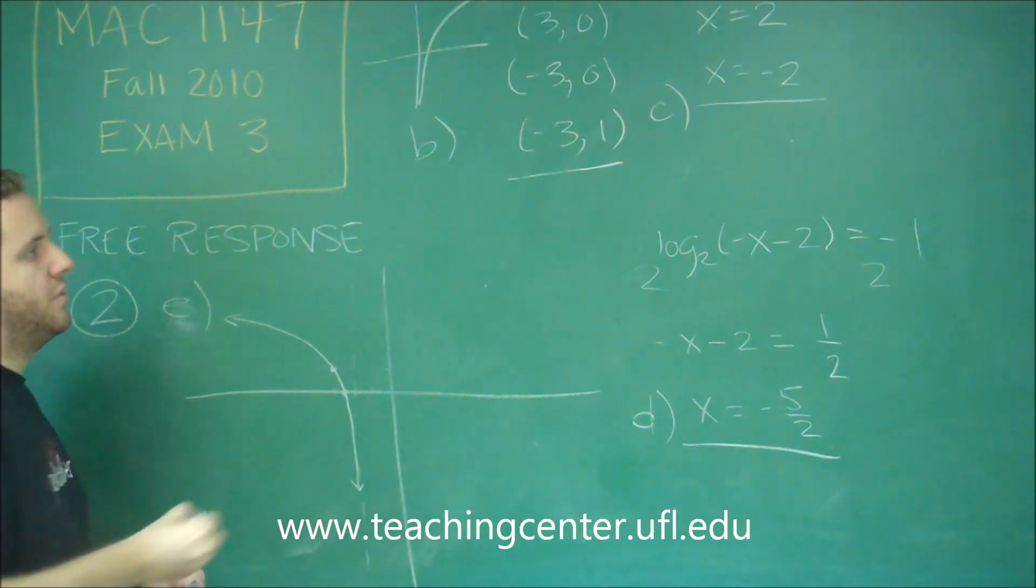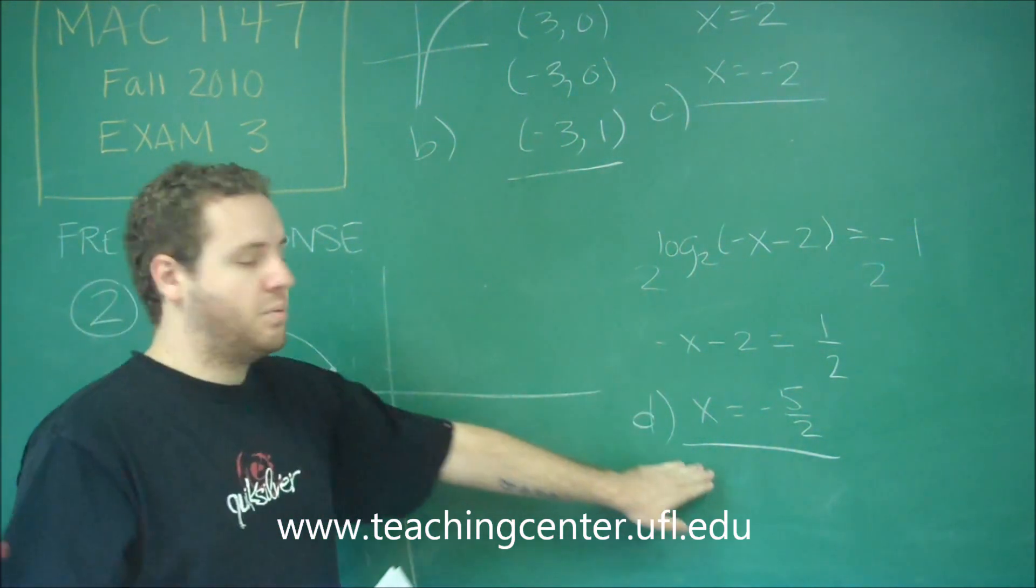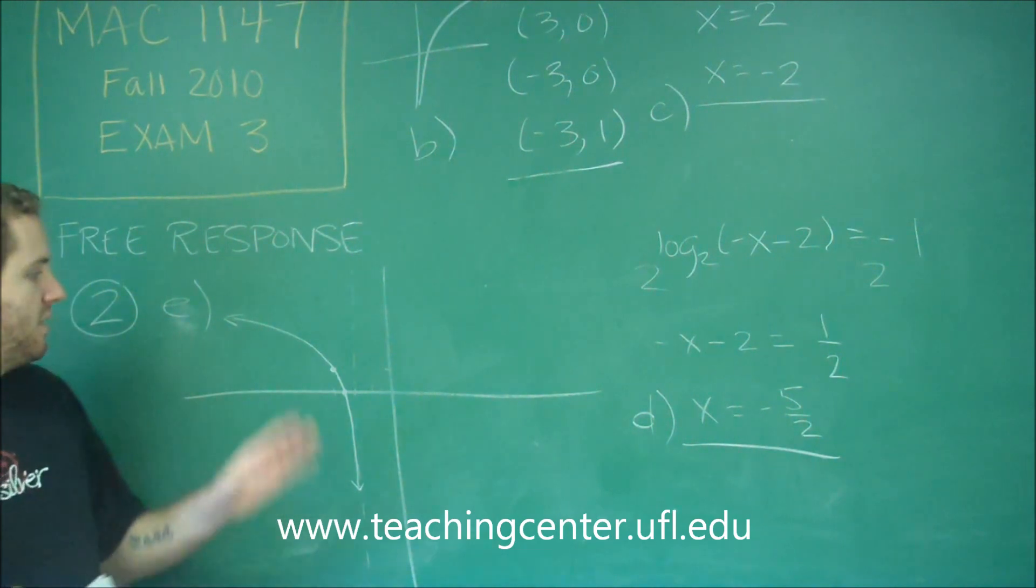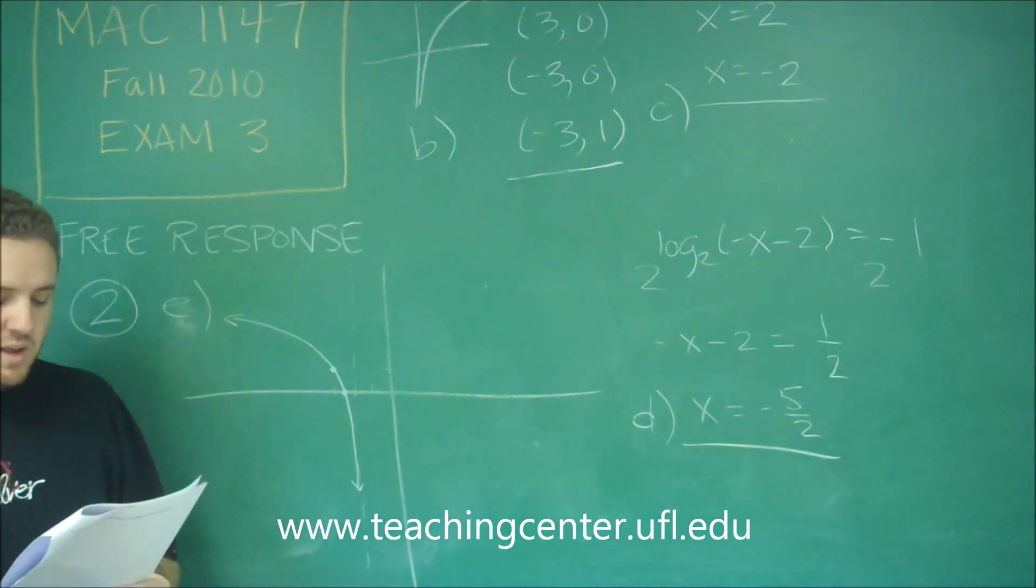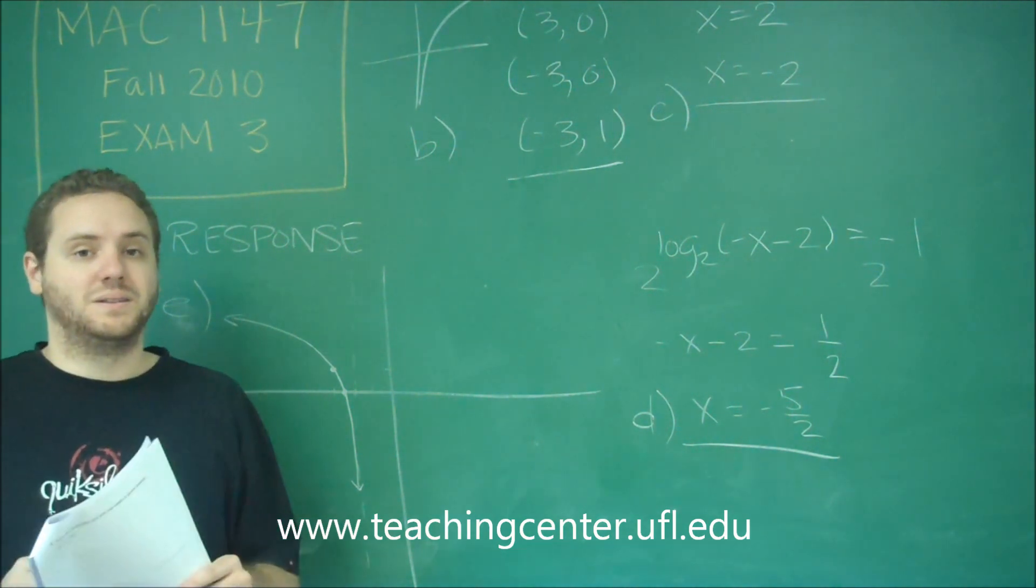Make sure you cross through this point and this point which are the important ones that you found and that you have the vertical asymptote in the correct place.